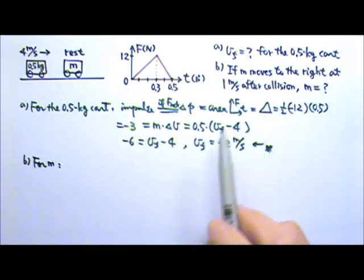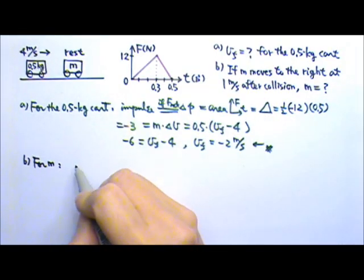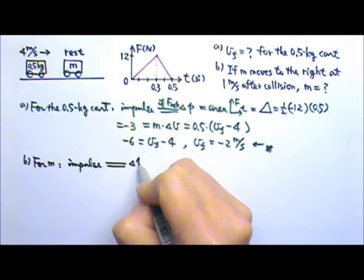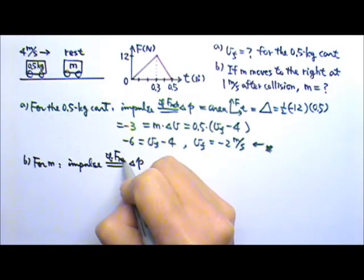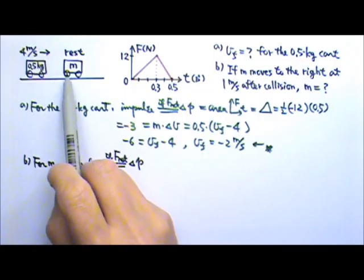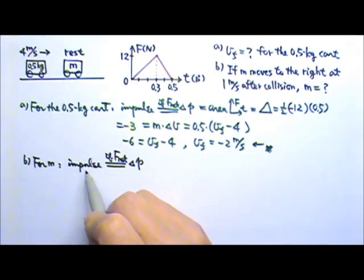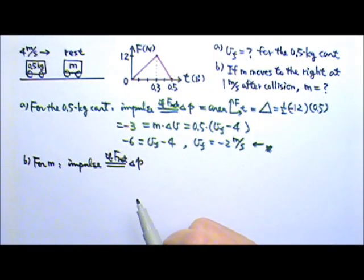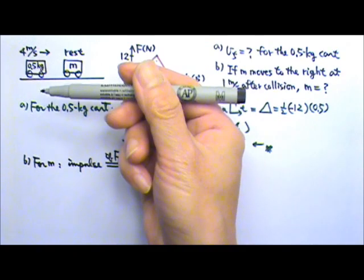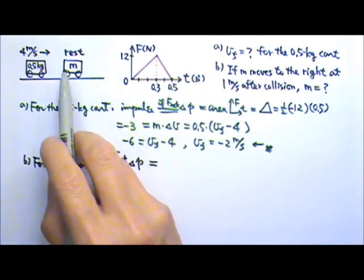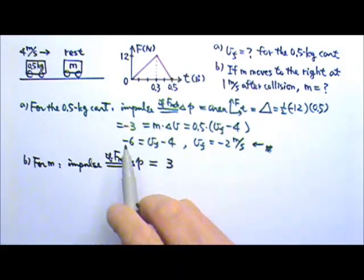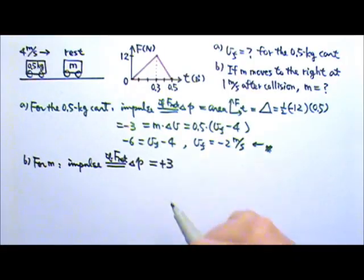For Part B, for the second cart, the impulse equals the change in momentum since the collision force is the net force on the second cart. The impulse on the 0.5 kg cart is negative 3. By Newton's third law, the impulse on the second cart must be the same magnitude but opposite in direction — positive 3, to the right.